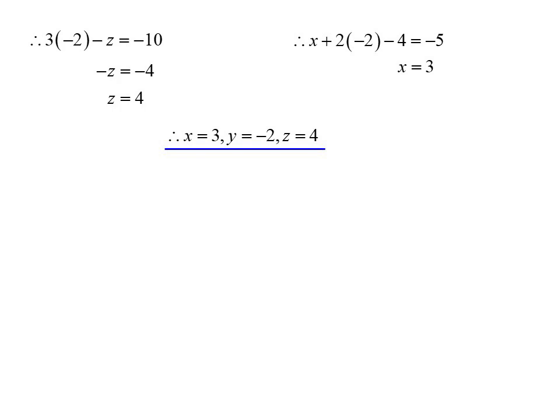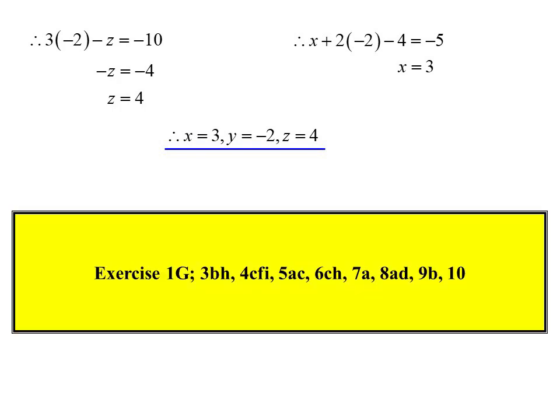Again, we're not necessarily talking about coordinate geometry here. So this would be a point in a three-dimensional space if we were. It's still the same thing. Where do three lines intersect at a common point? That's what we would have just found. 1g. That's going to do us for today. Bye.